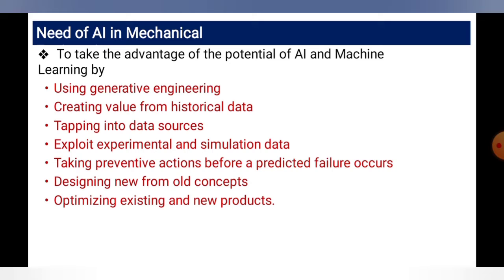Designing new from old concepts is self-explanatory — for example, the evolution from a simple button mobile phone to a touchscreen Android mobile. That is the revolution from old to new concepts. Optimizing existing and new products is similar — optimizing the existing product and creating a new one, as in the phone example.